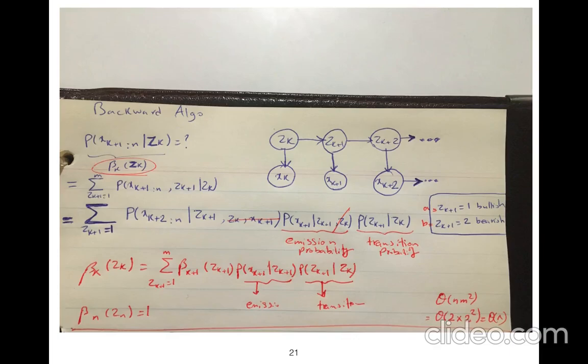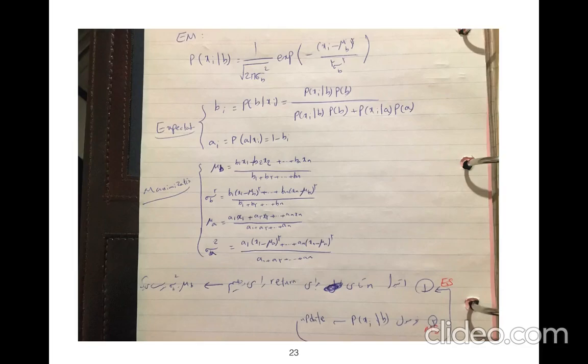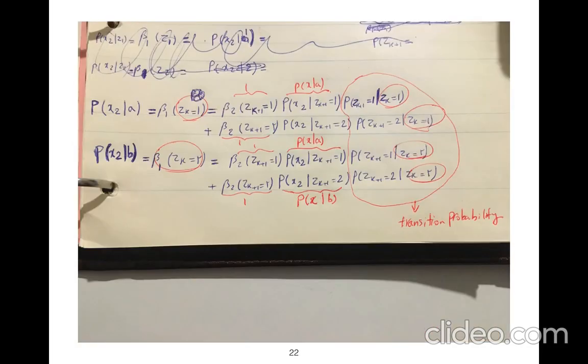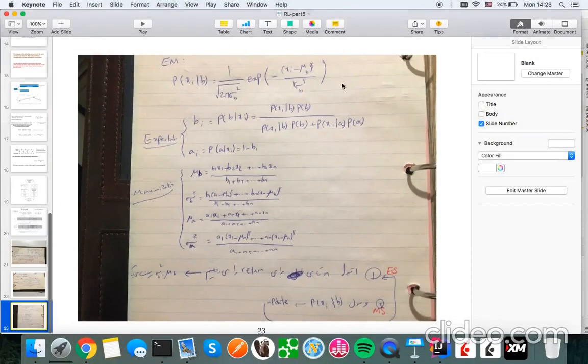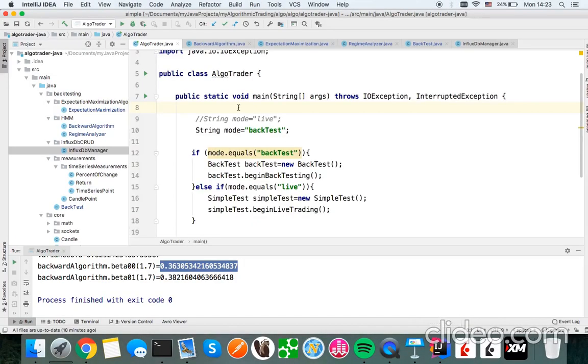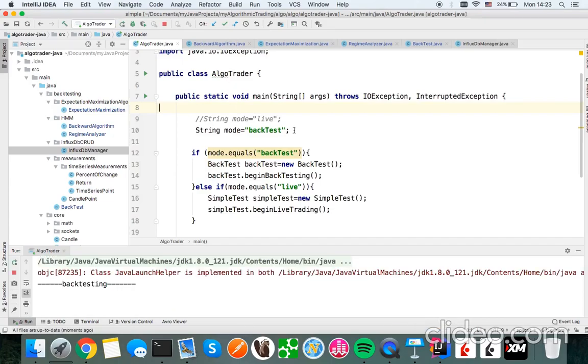For me, I use bullish and bearish, so in each hidden state I have only two hidden states. In each we are either bullish or bearish, and we calculate beta 1 and beta 2. This is expectation maximization algorithm, so let's run it in backtest mode.